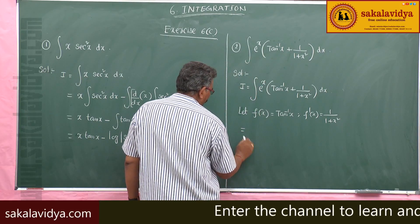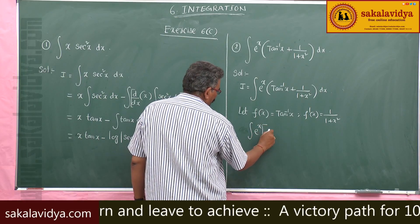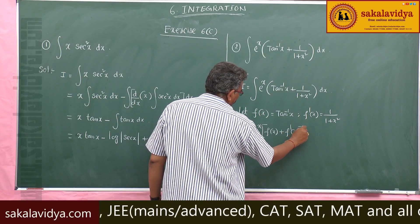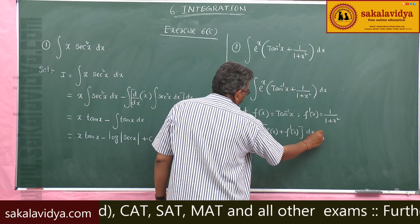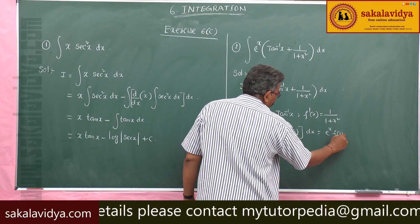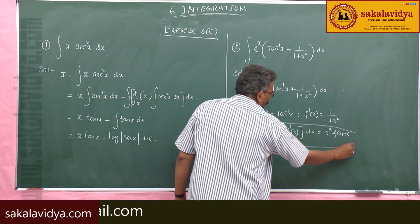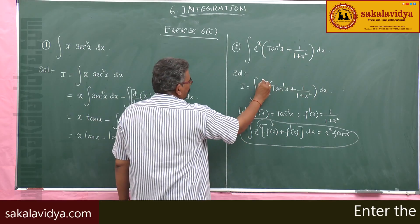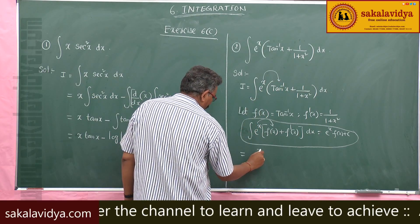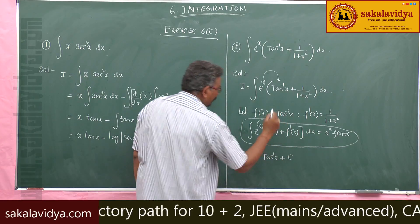With f(x) = tan⁻¹x and f'(x) = 1/(1+x²), we apply the formula: ∫eˣ·(f(x) + f'(x)) dx = eˣ·f(x) + C. Using this formula, the answer is eˣ·tan⁻¹x plus constant of integration.